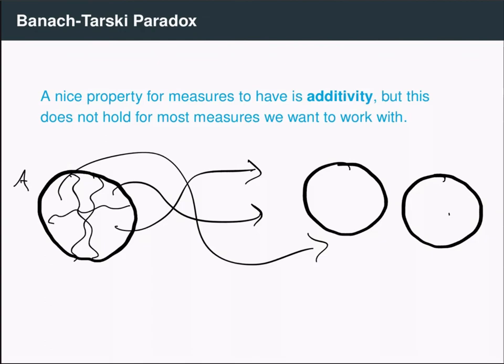But clearly, Lebesgue measure is additive for some very simple kinds of sets. Like if I didn't split this into weird axiom of choice sets, if I just split in half, then clearly the measure of the ball is equal to the sum of the halves. So we need a way of distinguishing or classifying sets that behave well with respect to measure in the sense of additivity. And this leads us to the notion of measurability.